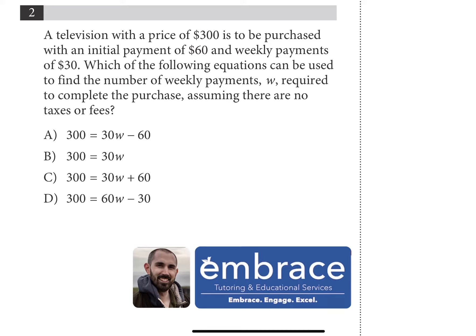Okay, let's get started. So a television with a price of $300 is to be purchased with an initial payment of $60 and weekly payments of $30. So in that first sentence we have a couple things I want to point out. We have the total price of the television is $300, we have an initial payment of $60, and we have a weekly payment of $30.